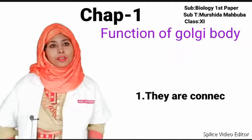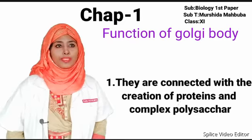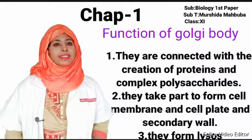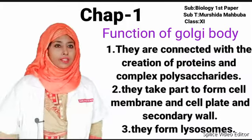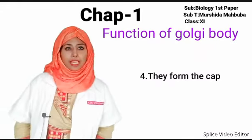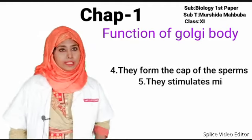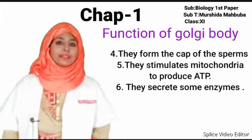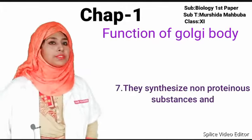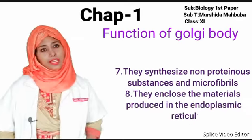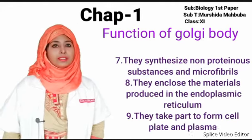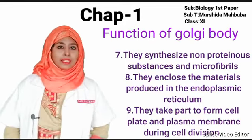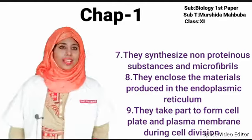Functions of Golgi body: They are connected with the creation of proteins and complex polysaccharides. They take part in forming the cell membrane, cell plate, and secondary wall. They form lysosomes and the acrosome of sperms. They stimulate mitochondria, suppress some enzymes, synthesize non-proteinous substances and microfibers, enclose materials produced in the endoplasmic reticulum, and take part in forming the cell plate and plasma membrane during cell division.